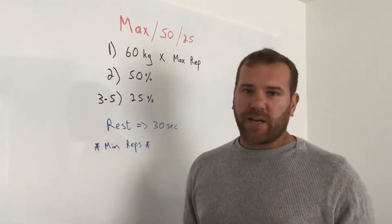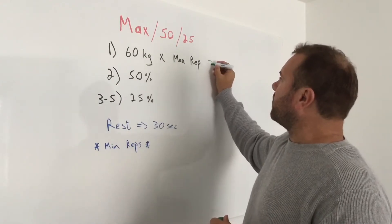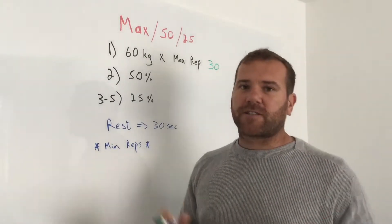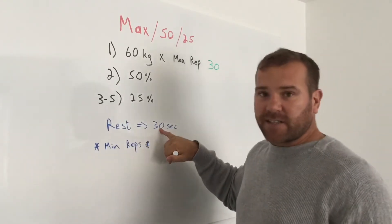You're just going to pump out as many reps as you can on that 60 kilograms. Let's say for example you can do 30 - that's your maximum effort on 60 kilograms. You then rest 30 seconds.